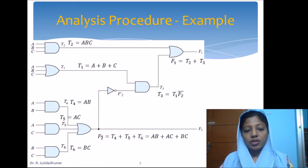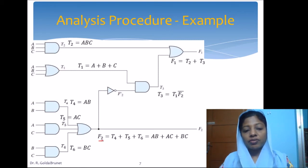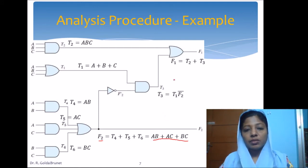Now let's back-substitute for the temporary variables. F2 can be written as T4 + T5 + T6, and substituting: T4 = AB, T5 = AC, T6 = BC. So F2 = AB + AC + BC, expressed entirely in terms of input variables A, B, C. We have now written F2 as one of the circuit outputs in terms of the inputs.